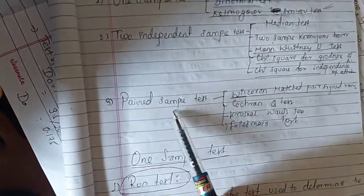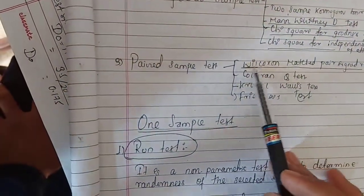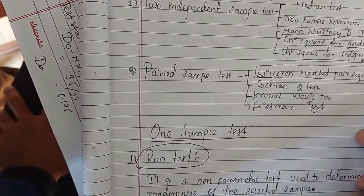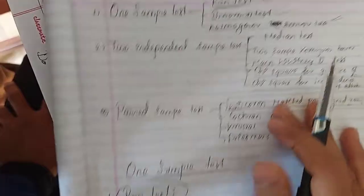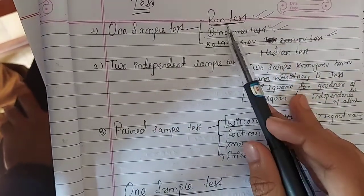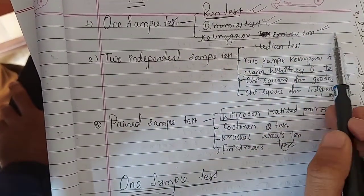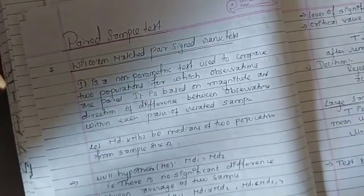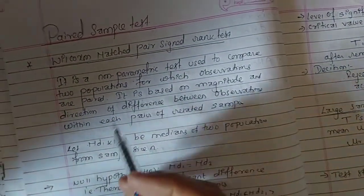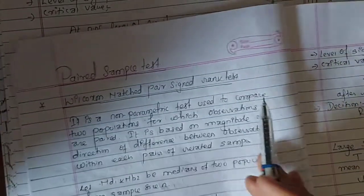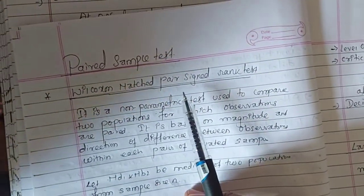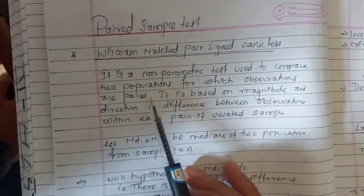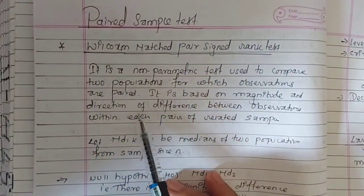Let's have a first simple test. It will cover the Wilcoxon matched pairs signed rank test. This is a nonparametric test used to compare two populations for which observations are paired.